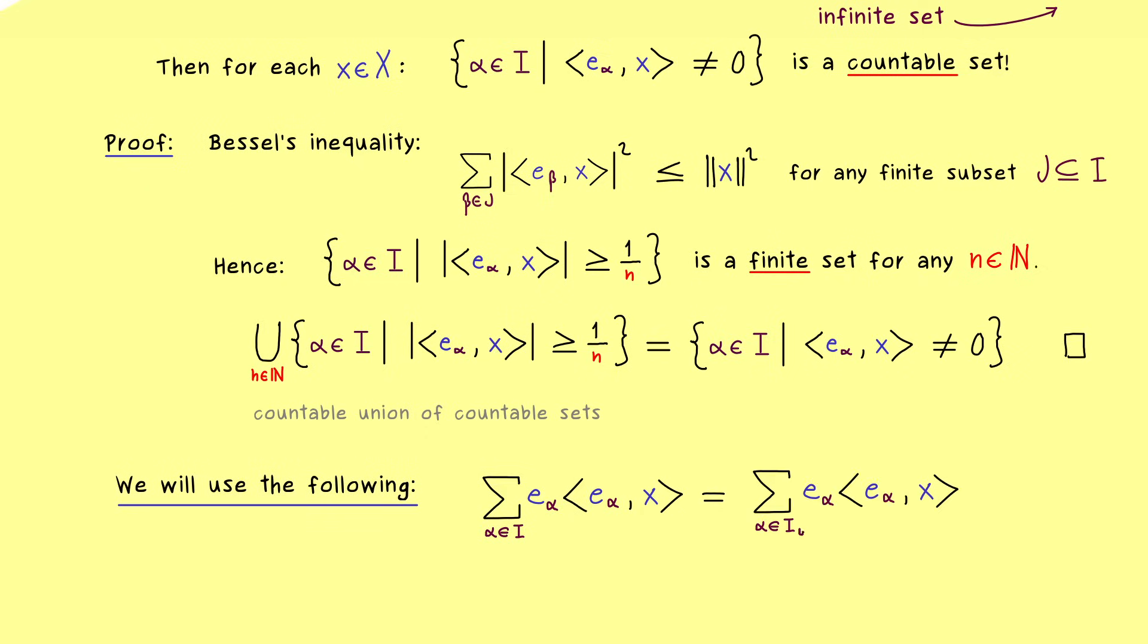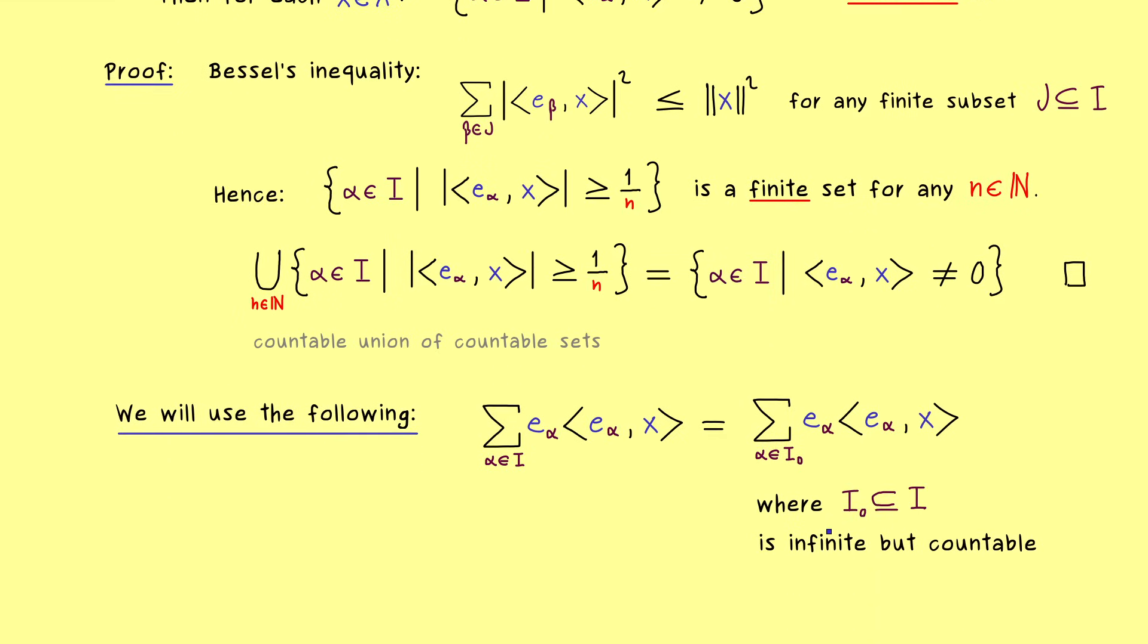Hence instead of I we could say we have I_0, where I_0 is a countable subset of I. And since we only consider the case that I is an infinite set, we could also take I_0 as an infinite set as well. So depending on x this could also be chosen as a finite set, but we don't want to do it, we still want to stay at infinity. Hence I_0 is possibly larger than we actually need it, but then we don't have to distinguish two cases.